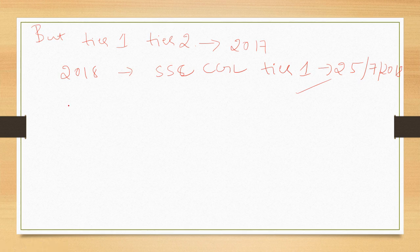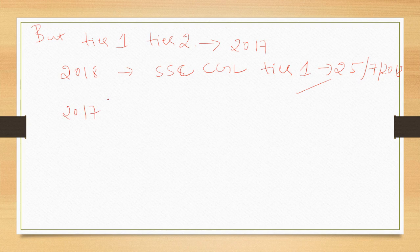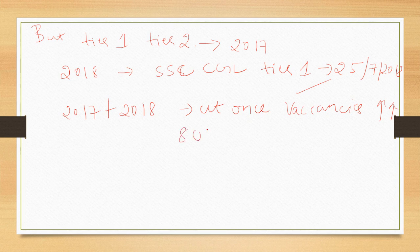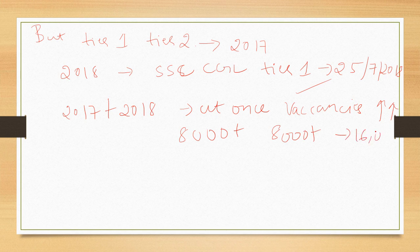One thing that they can do is either conduct 2017's exam and 18 exam at once and let the vacancies be more vacancies be more say this year it was around 8000 plus and next year also it will be around 8000 plus. So make it 16000 vacancy or if they don't want to do this they can do one thing.